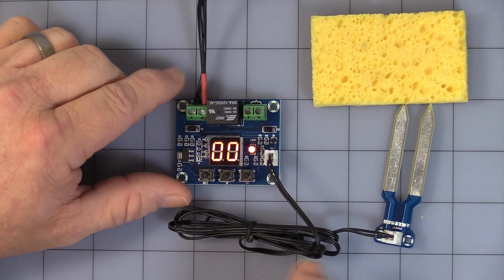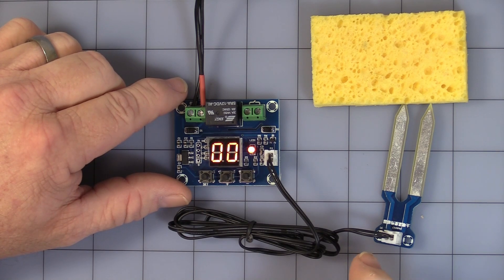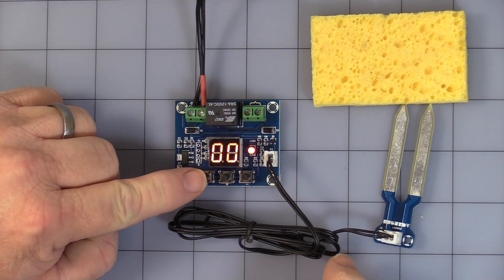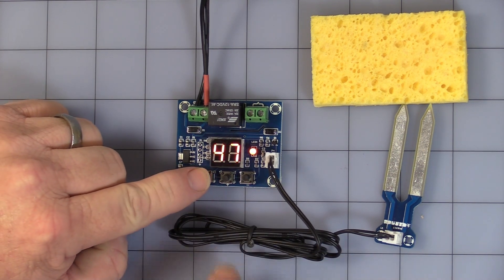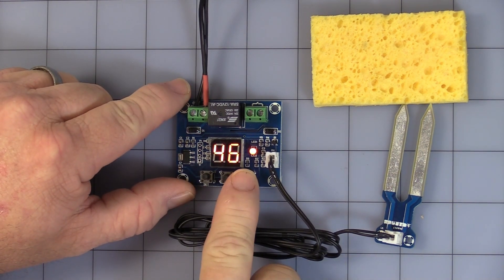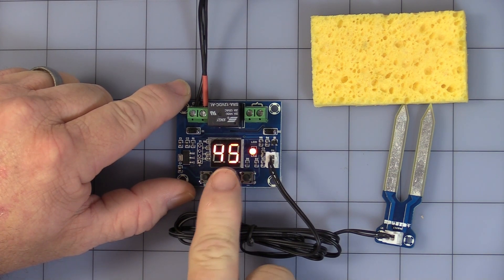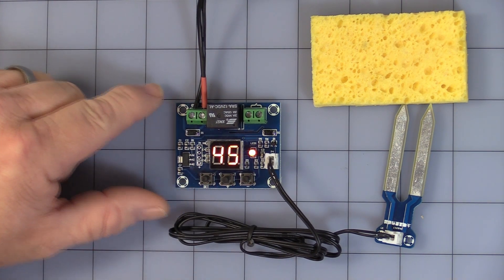To get to the offset value, you press the set button once and it will display F0. Then press it again. That shows the actual value where the relay will turn off. You use the plus and the minus button to set the point you want.